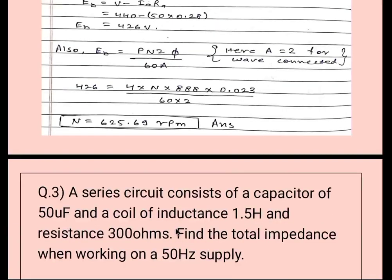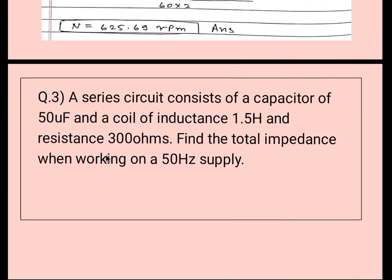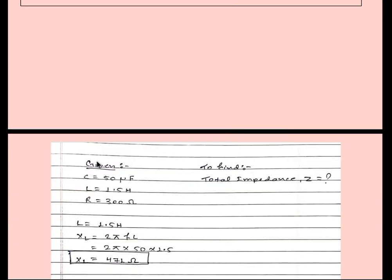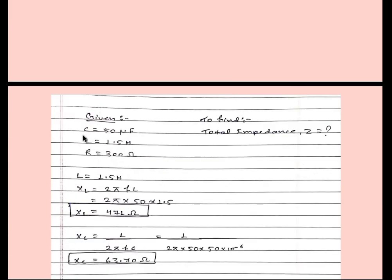Moving to the next numerical, question number three: A series circuit consists of a capacitor of 50 microfarad and coil of inductance 1.5 henry and resistance 300 ohms. Find the total impedance when working on a 50 hertz supply. Very easy question. Here what is given: C is equal to 50 microfarad, inductance is 1.5 henry, resistance is 300 ohm, and we have to find total impedance.